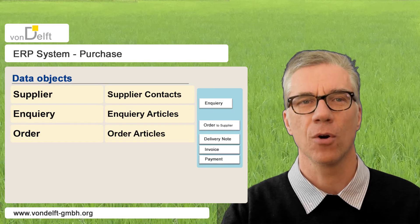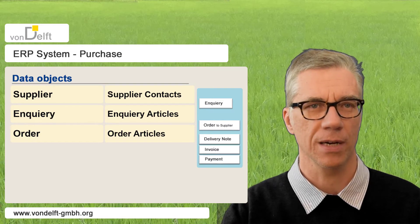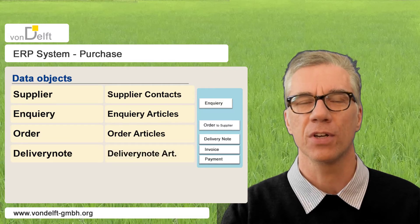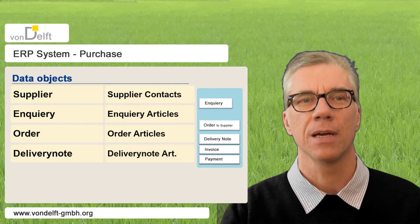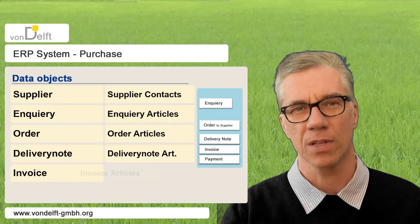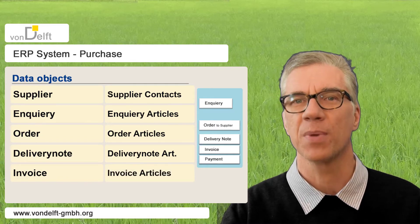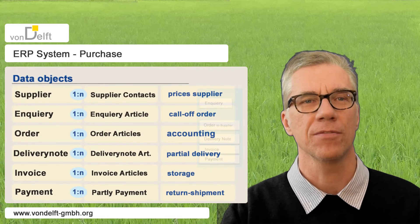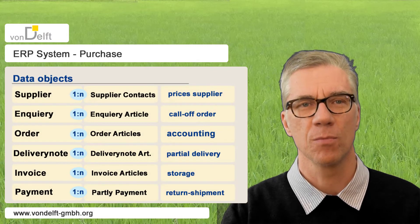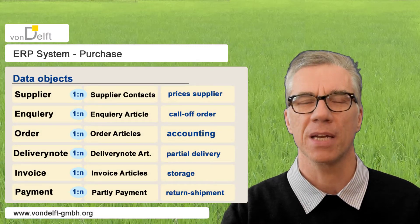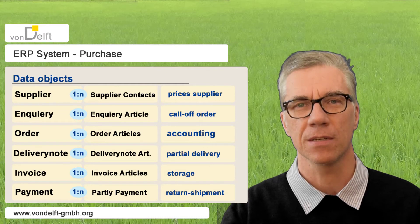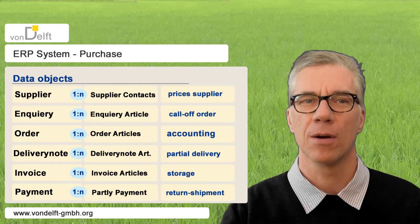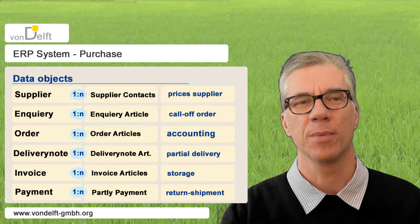Incoming order confirmations are not regarded. There are delivery notes and delivery note articles. There are invoices with invoice articles, and then payment with partial payment. Even for this small area there are many data objects needed, and with the omitted objects the amount of data objects will be doubled.